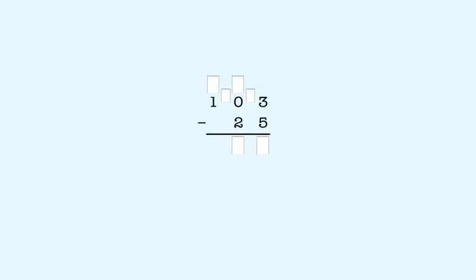Another example: 103 minus 25. We start subtracting in the ones place. We can't subtract 5 from 3, so we have to take a 10 to make 10 ones. But in the tens place, there are no tens to take — that's a zero.